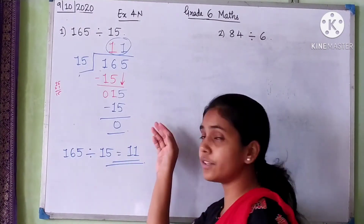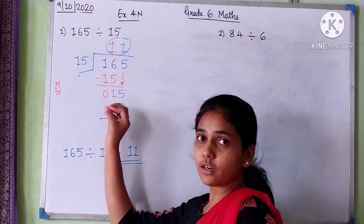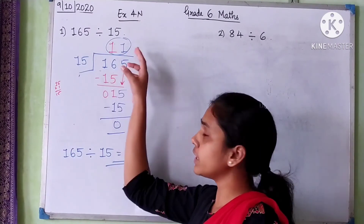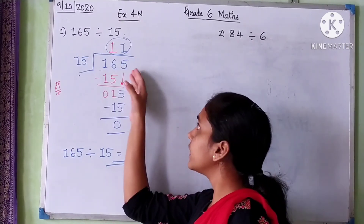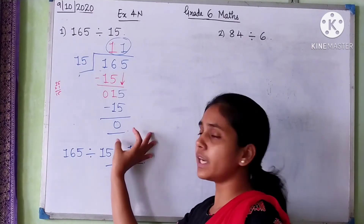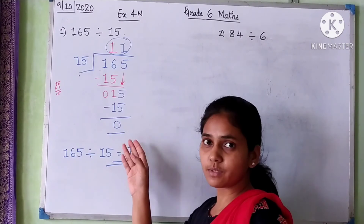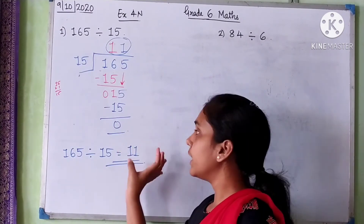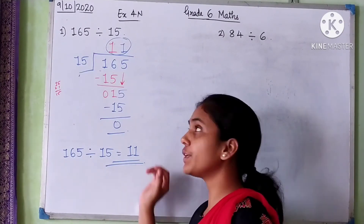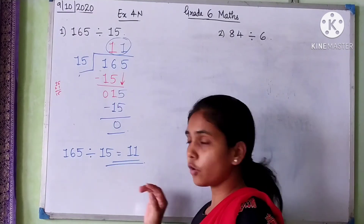This is called the repeated division method — first we take two digits, divide them, then bring down the next digit and continue until all numbers are used. If the remainder is not zero, you can stop there or put a decimal point and continue further.